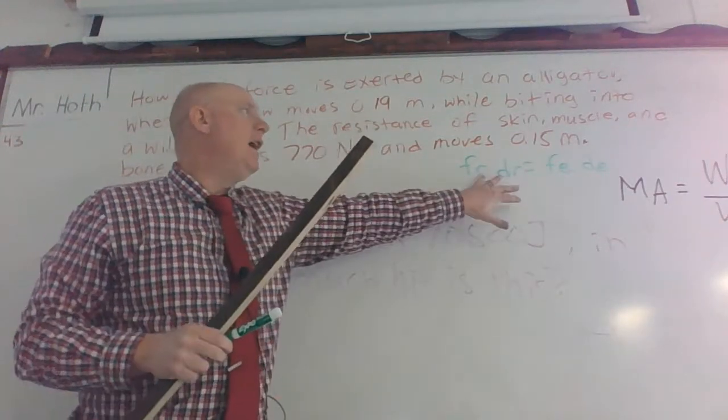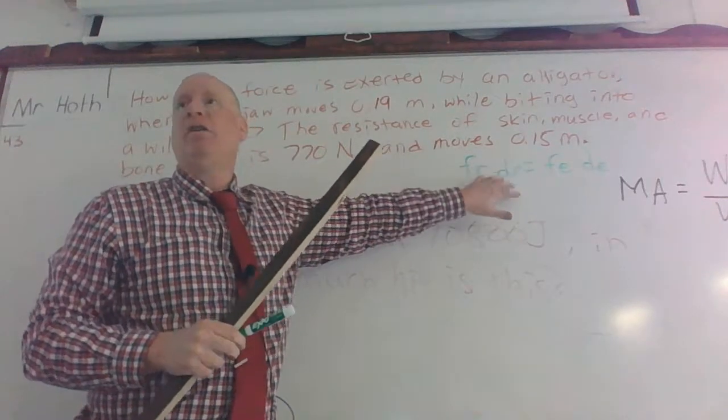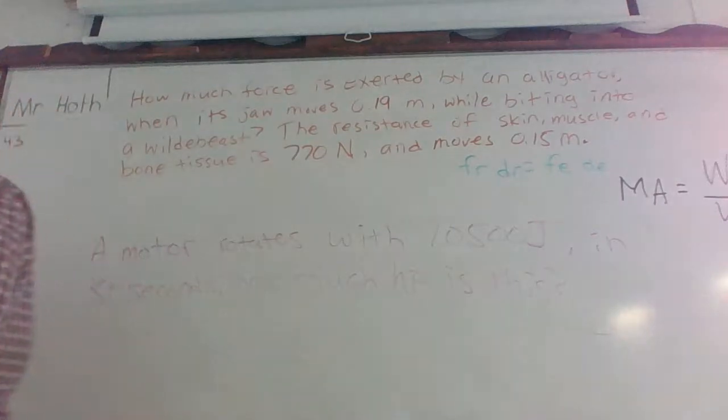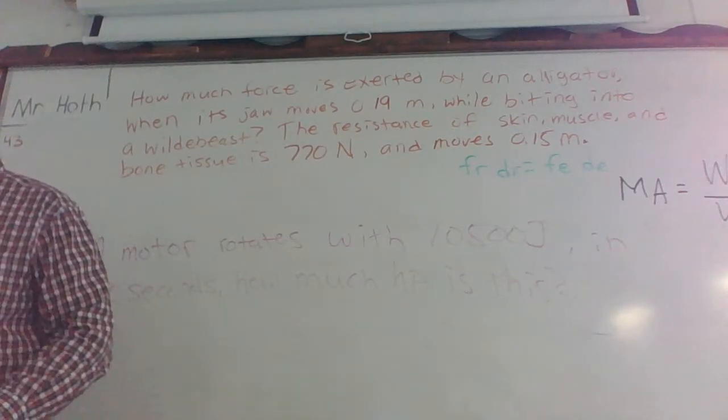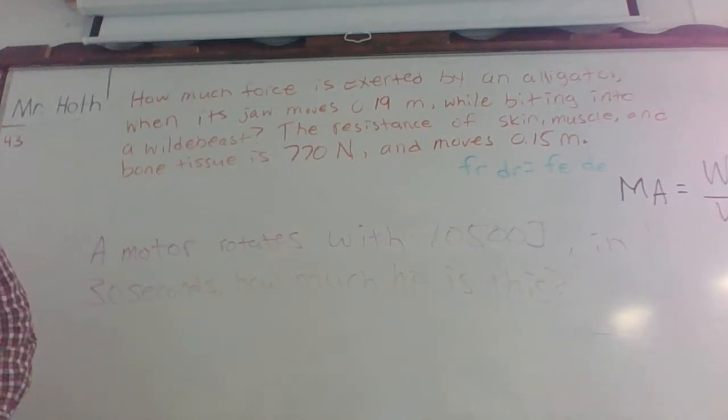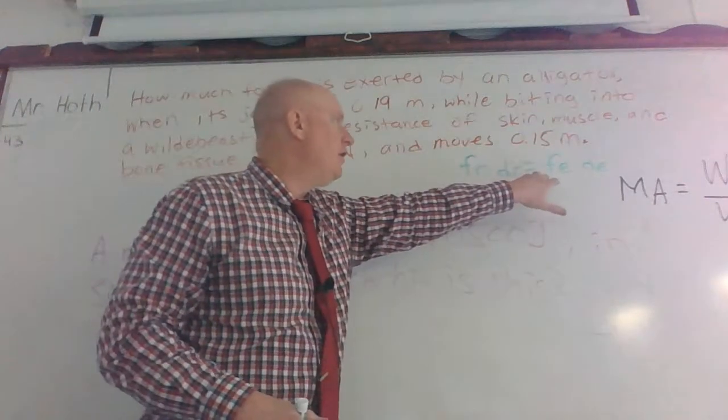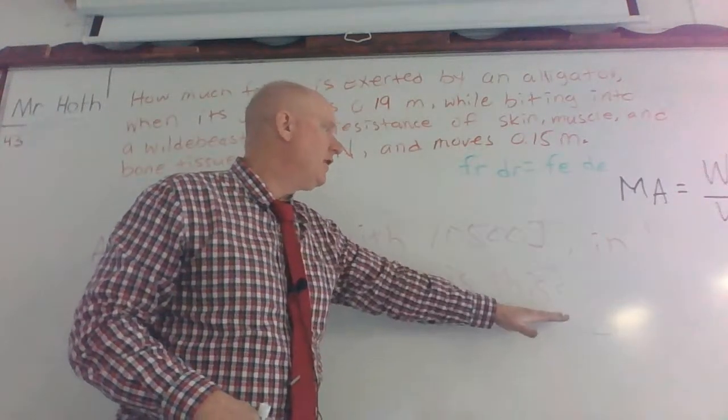So I know some of you are asking questions about this. And it was a valid one. How do you know whether you're using this formula or the one that says efficiency equals FR times DR over FE times DE? Well, if it says anything about efficiency, you're using that one. If it says anything about a force in two movements, well then, it's going to be this linear equation that we see right here.